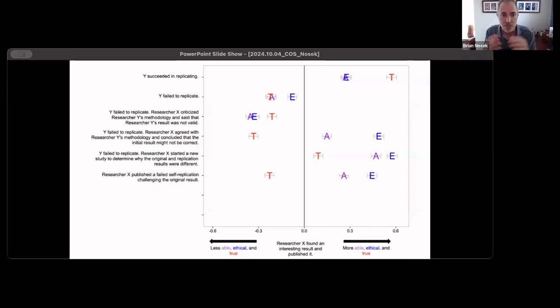One more. Researcher X now, researcher Y is no longer in the picture. Researcher X tries to replicate their own work and they publish a failed replication challenging their original result. So I got it one time, now I try again, I didn't get it, and I publish again saying, well, I didn't get it this time. You see a similar response of decrease in the belief that the finding is true, as if an independent replicator finds that. But you similarly see an increase in the perceived ability and ethics.